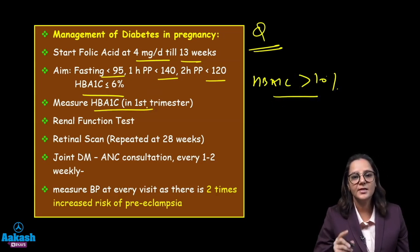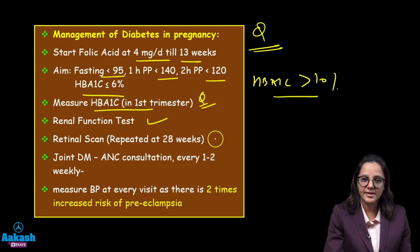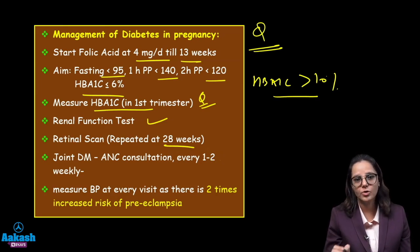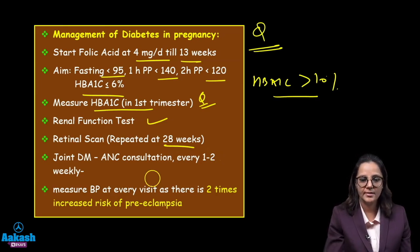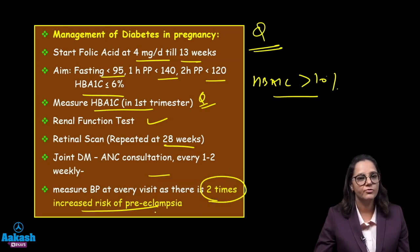Measure HbA1c in the first trimester. Also measure renal function test and retinal scan, which is repeated at 28 weeks. The patient will be seen every 2 weeks between the obstetrician and the endocrinologist, and BP has to be measured at every visit because there is 2 times increased risk of preeclampsia.